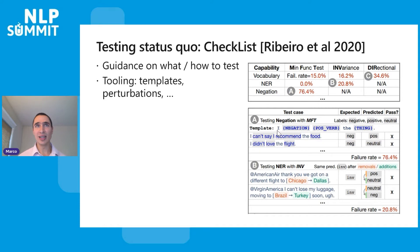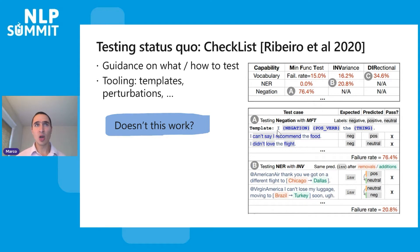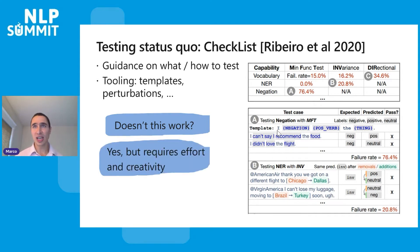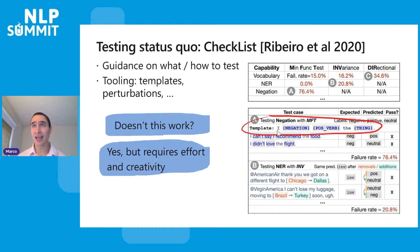You may be thinking: do we need a new paper, a new call for testing? Doesn't this work already? The short answer is that it does work. CheckList is a huge improvement over the previous status quo, which was nothing. But there are a few problems with it. One problem is that using checklists or something similar requires a lot of creativity and effort. For example, CheckList relies on templates quite a bit. You generate examples like 'I didn't love the site' or 'I can't say I recommend the food' by using a template, and thinking about that template requires creativity.